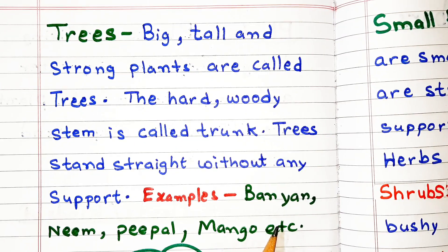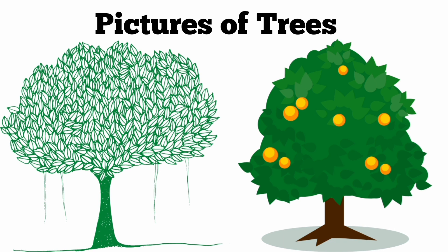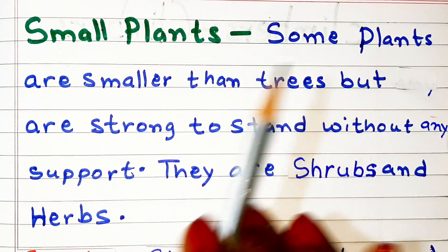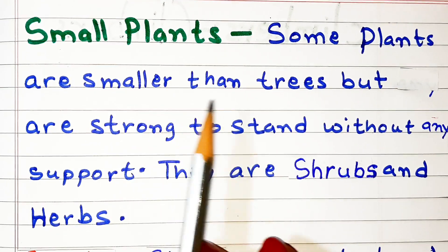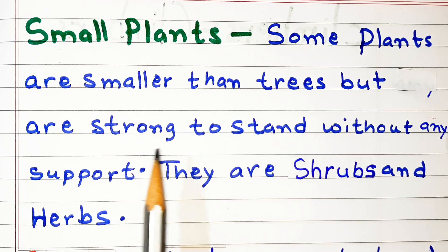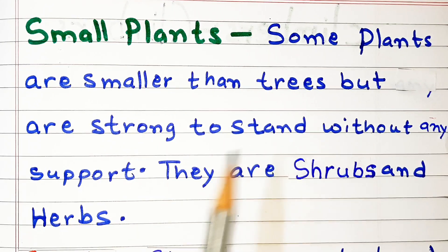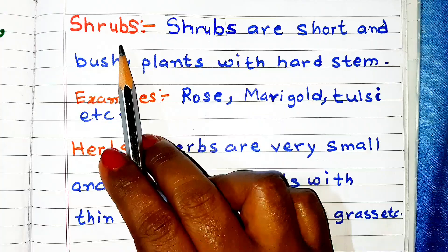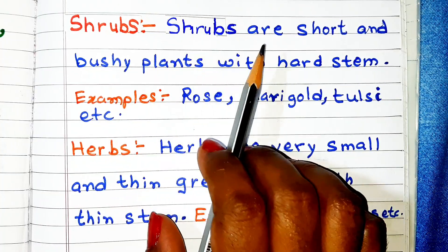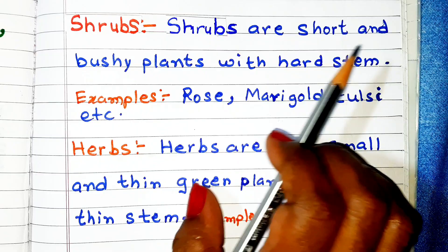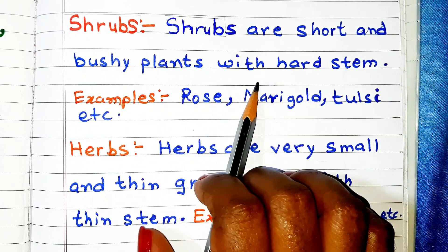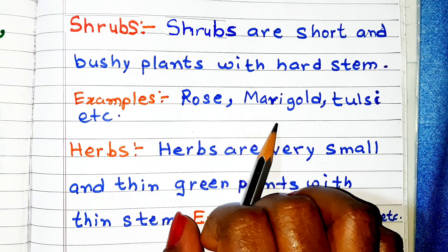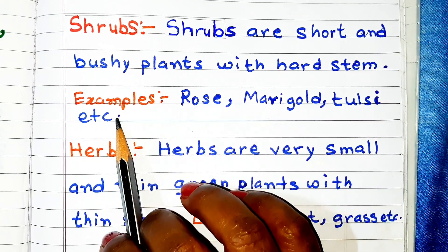Some plants are smaller than trees but are strong enough to stand without any support — they are shrubs and herbs. Shrubs are short and bushy plants with a hard stem. Examples: rose, marigold, tulsi, etc.